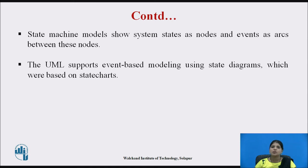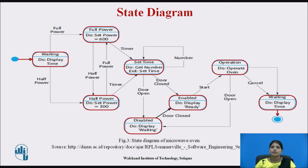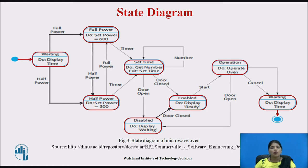UML supports event based modeling using state diagrams which are based on state charts. This is an example of a state diagram of microwave ovens. Real microwave ovens are actually much more complex, but the simplified system is easier to understand. This simple microwave has a switch to select full or half power, a numeric keypad to input the cooking time, a start and stop button, and an alphanumeric display. The oven power is set to 300 watts and the display shows half power, or set to 600 watts and the display shows full power.